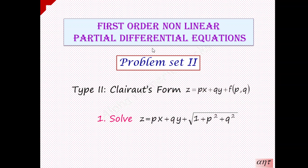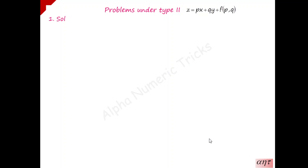Now we are going to see how to get the solution of Type 2 problems, that is Clairaut's form: z = px + qy + f(p, q). Specifically, we will solve z = px + qy + √(1 + p² + q²).